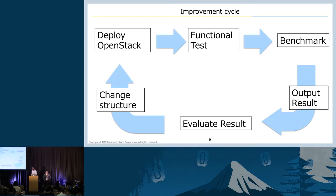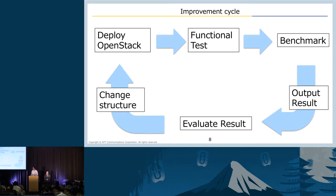Before the automation, we did the following steps: starting from deployment, functional test, benchmark, evaluate result. If you don't satisfy the result, you need one more cycle. As you can see, there are many tasks, so it's hard to do this manually.